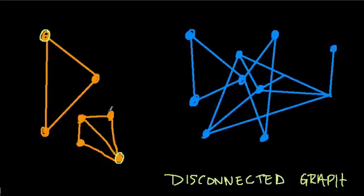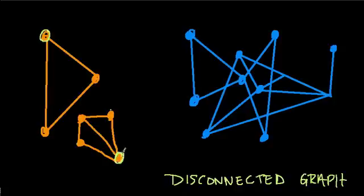A more official definition would be: in a disconnected graph, you have two vertices — or at least two — that have no route along the edges connecting them. So if you can find any two vertices that don't connect in some way, then you have a disconnected graph.